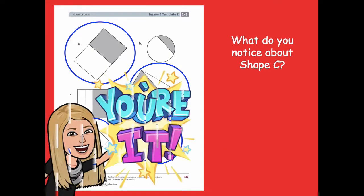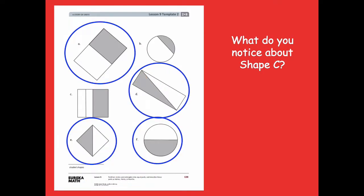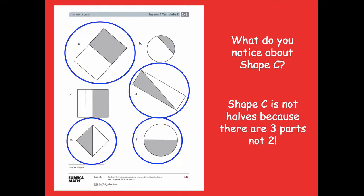What do you notice about shape C? Pause the video, think about shape C, then click play when ready. Shape C is not halves because there are three parts, not two. Even if the parts weren't equal, that wouldn't matter — there are too many parts to be halves. We can't have three parts and call it halves. Shapes D, E, and F all have two equal parts, so those are halves.